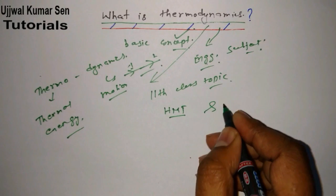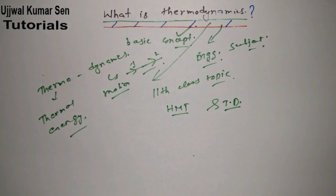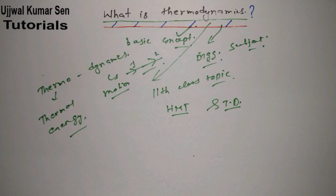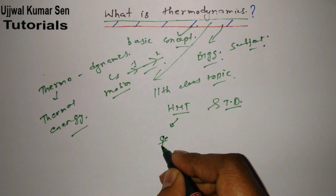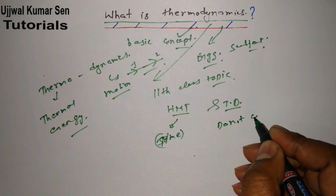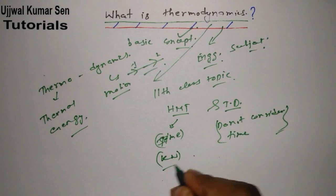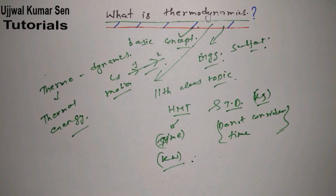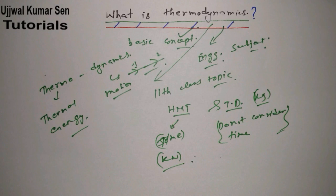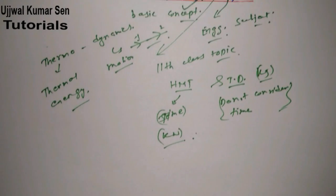Now, if you understand the difference between heat and mass transfer (HMT) and thermodynamics — I have already shared a video on that. HMT is also a subject in mechanical engineering. The main difference is: in HMT we consider time, but in thermodynamics we do not consider time. That means in thermodynamics results are in kilojoules, not kilowatts — you will not see kilojoules per second in thermodynamics.